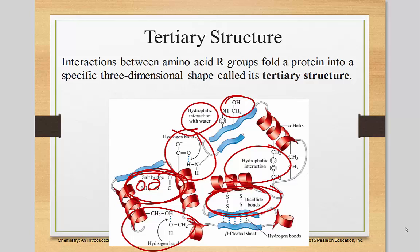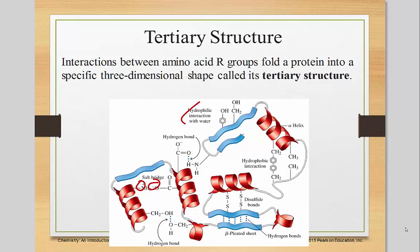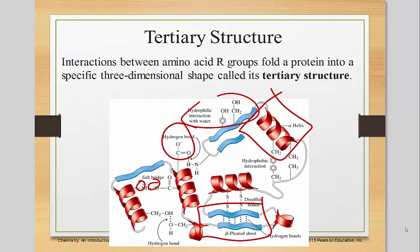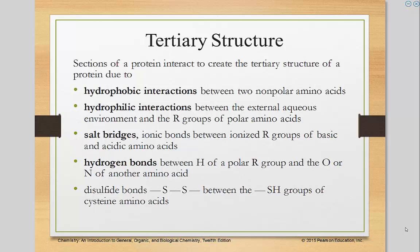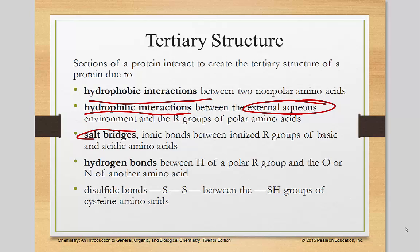Notice that in this structure, not only do we have all these interactions happening, we also have the alpha helix and the beta sheet all embedded into this, so all of these different parts are acting together at the same time. Sections of the protein interact to create the tertiary structure due to these five things: hydrophobic interactions — non-polar things getting close to each other; hydrophilic things that bend outward toward the aqueous environment; salt bridges, which are the positive and negative interactions; hydrogen bonding; and finally disulfide, which is sulfur-sulfur.